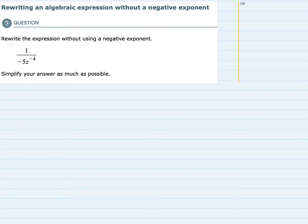And in this expression that we're asked to rewrite, we have a negative exponent that is being applied to a z. So we have z to the negative fourth power.